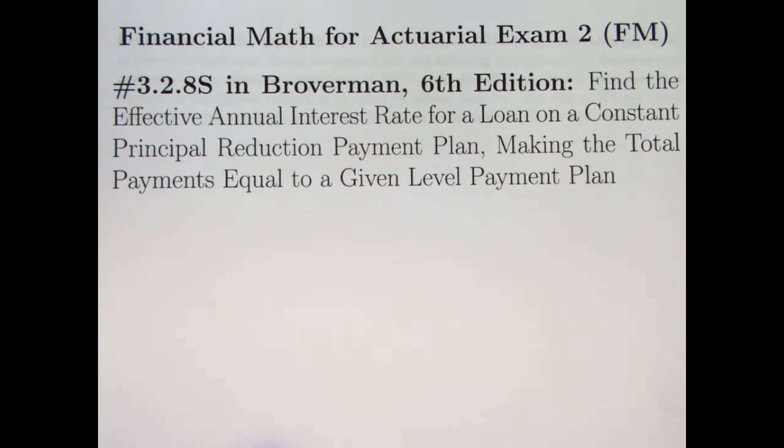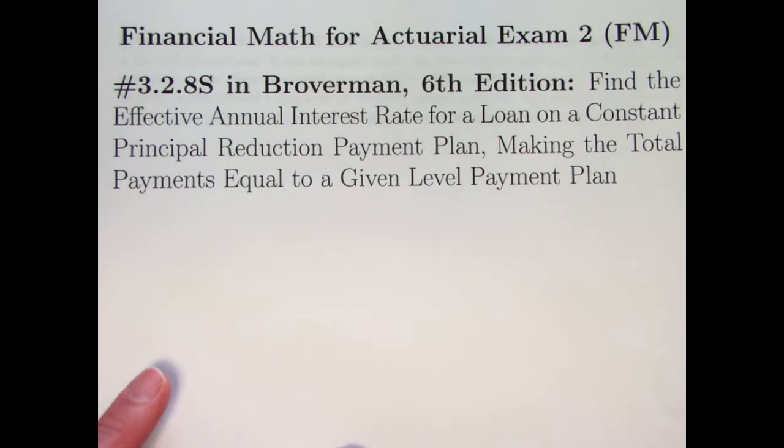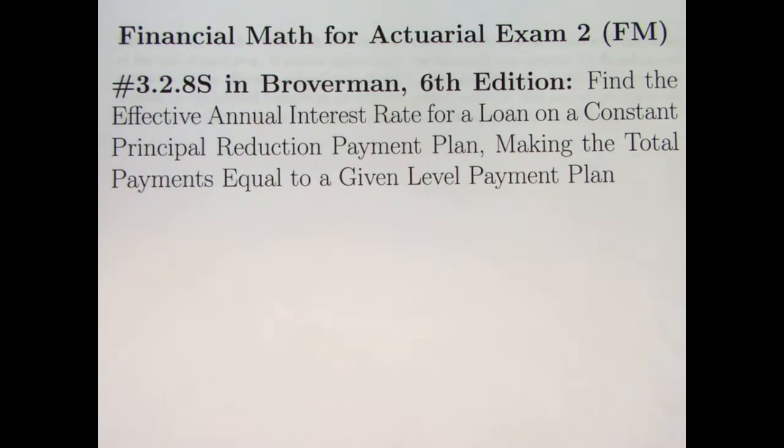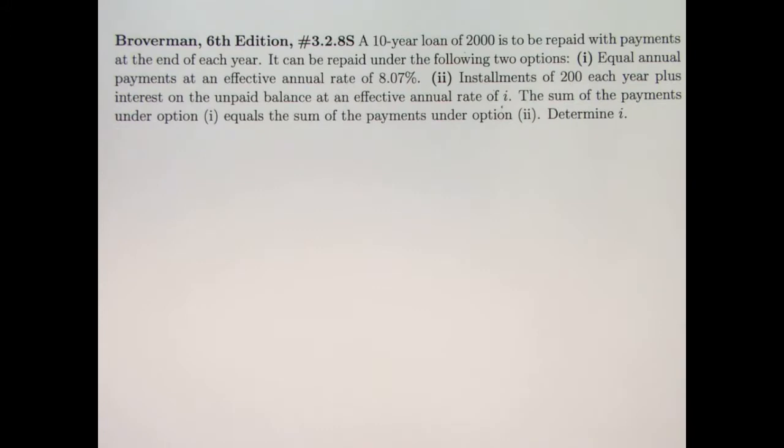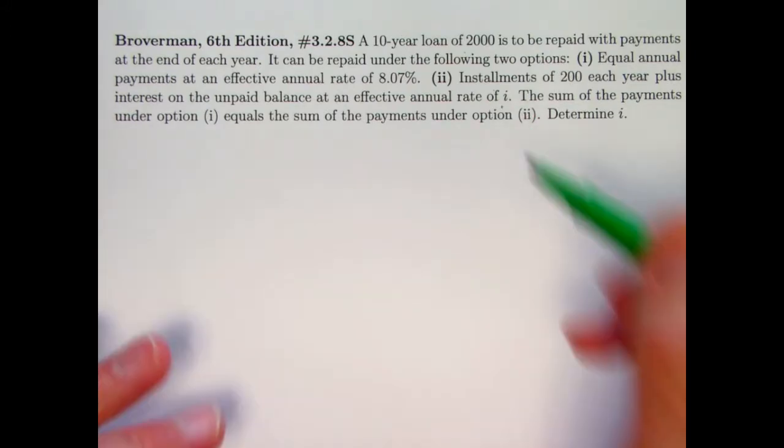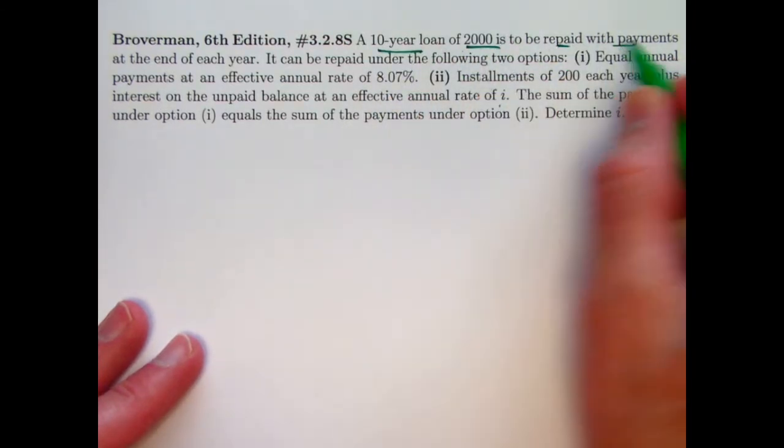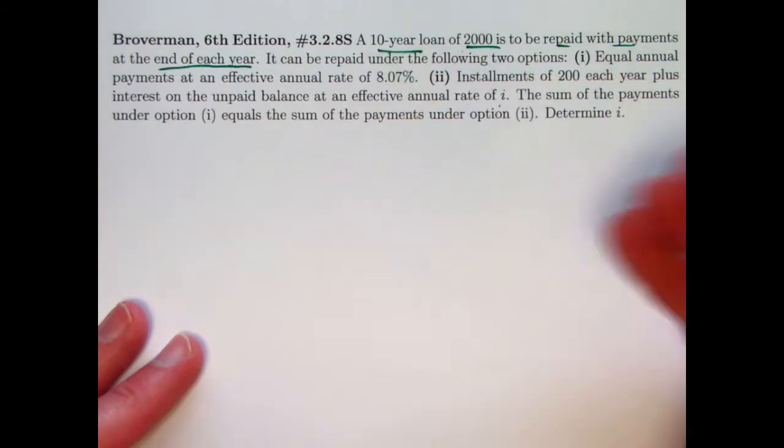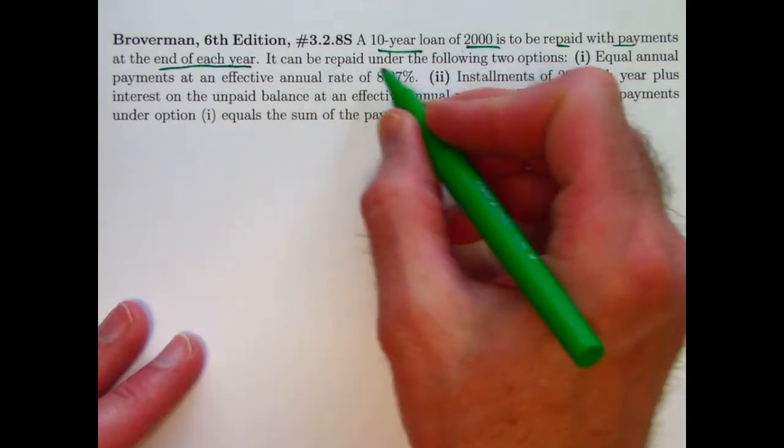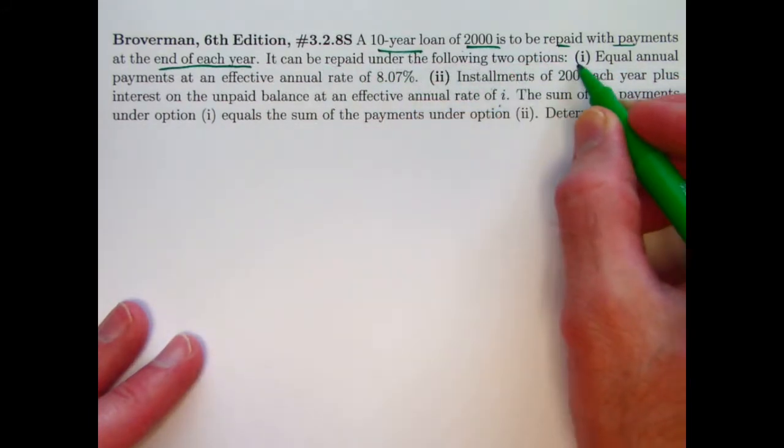We want the two total payment amounts to be equal for these two different situations and find the effective annual interest rate for the first situation. And actually it's going to be option two in the problem statement itself. We've got a 10-year loan that's $2,000. It's repaid with payments at the end of each year, so as an annuity immediate it can be repaid under one of the following two options.